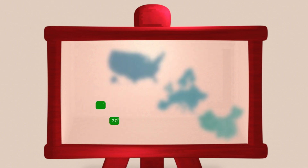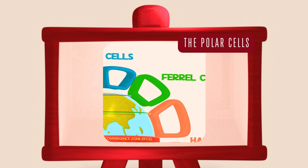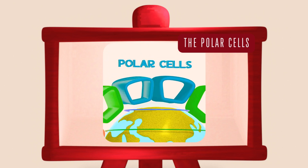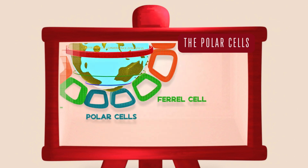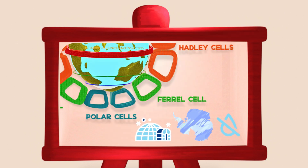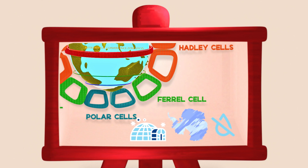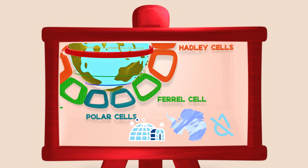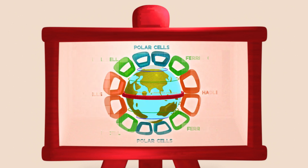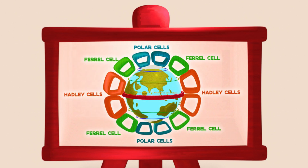At the poles, we find the polar cells. These are smaller and driven by cold, sinking air at the north and south pole. The air here is dry and stable, which is why regions like Antarctica are technically deserts, even though they are covered in ice. Together, the Hadley, Ferrel and polar cells form the global atmospheric circulation system — a huge engine of moving air, weather and climate patterns around the planet.